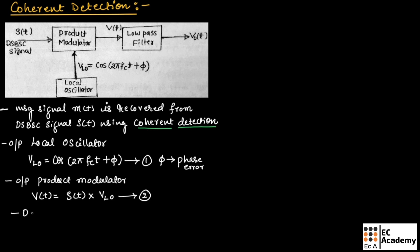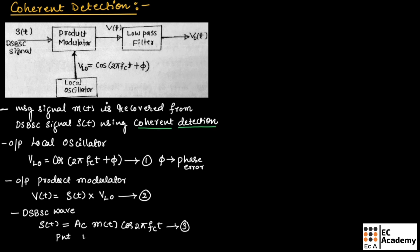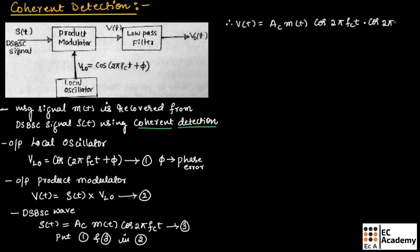The DSBSC signal is given as S of T = A_c M of T cos(2π f_c t). Let us call this equation number 3. Substituting equation 3, we can write V of T = A_c M of T cos(2π f_c t) multiplied by cos(2π f_c t + φ).